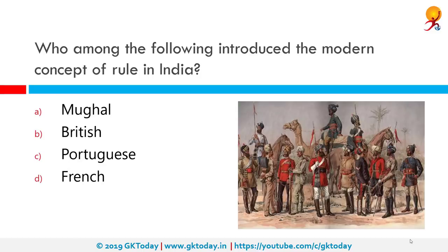Who among the following introduced the modern concept of rule in India? That would be the British. During the British Raj, India was made up of two types of territories: British India and the native or princely states. The term British India has also been used to refer to the regions under the rule of the British East India Company in India from 1600 to 1858.